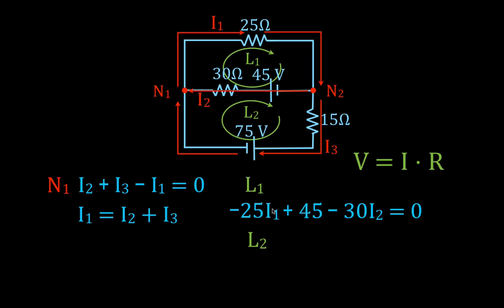For loop two, starting on the left and going clockwise: we encounter the 30 ohm resistor going against I2 (which flows right to left), so that's a voltage gain — we write plus 30·I2. We encounter the 45 volt source going from positive to negative, so we write minus 45. Then the 15 ohm resistor going with I3 — a voltage drop — minus 15·I3. Then across the 75 volt source going positive to negative — minus 75. Set equal to zero.